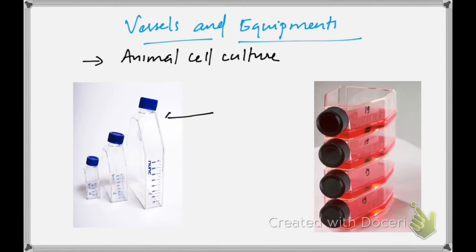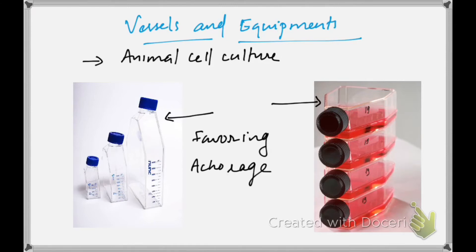These bottles favor the growth of animal cells — they already have some anchoring and special coatings at the bottom. Animal cells are anchorage dependent, so these special type of culture tubes help the growth of animal cells.